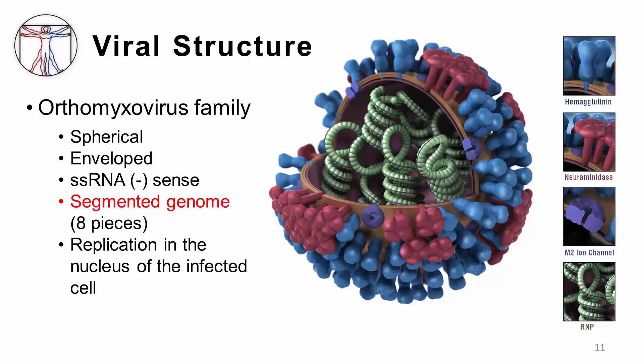Unlike paramyxo viruses, which are a similar family, the orthomyxo viruses have a segmented RNA genome, usually comprised of eight pieces. Finally, viral replication occurs in the nucleus of the infected cell, which is a feature unique amongst RNA viruses and shared only with the retroviruses and the hepatitis D virus.